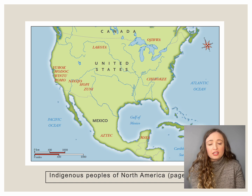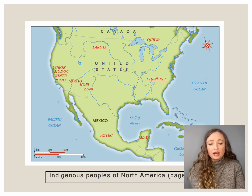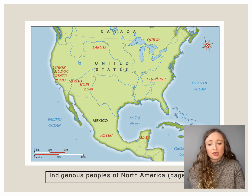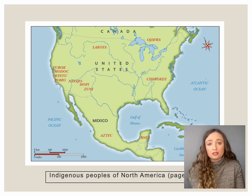You'll find a picture in your textbook, I believe in chapter 32, that highlights all the Native tribes talked about in this chapter. Living in Oklahoma or a surrounding area, you're likely familiar with the Cherokee tribe, but this chapter gives you a chance to learn about some of the lesser-known tribes, or at least lesser-known to us.